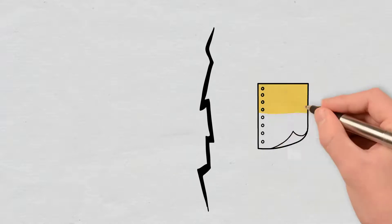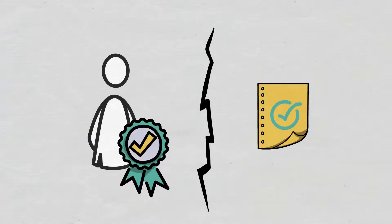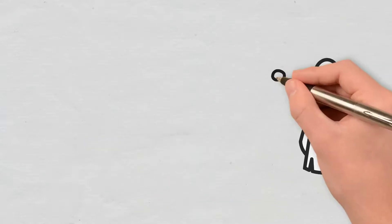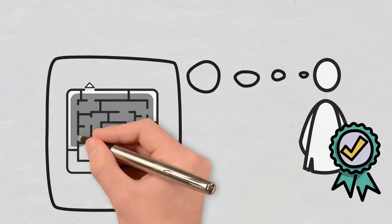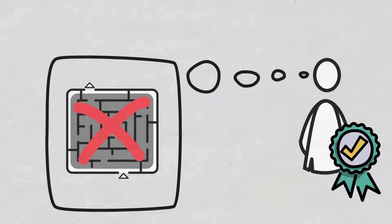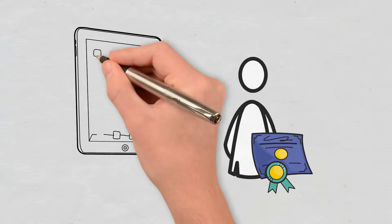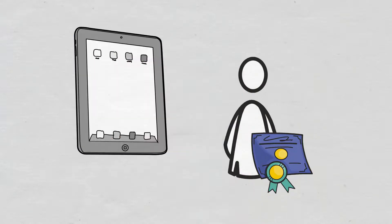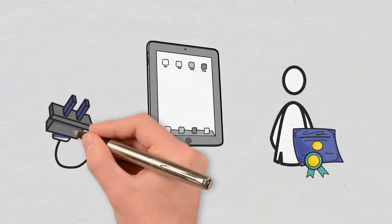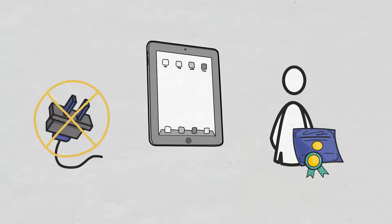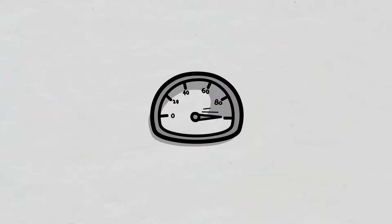Unlike Proof of Work, and similar to Proof of Stake, Proof of Authority doesn't rely on solving puzzles in order to make sure that there is a continuous connection between nodes. This means a Proof of Authority validator doesn't require special equipment to help maintain the network. This also is great for reducing the amount of power used.